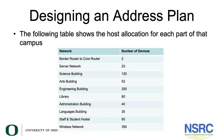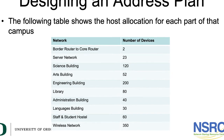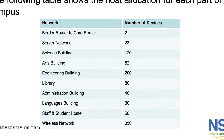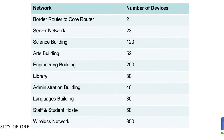The following table shows you the host allocation for each part of that campus. As you can see on the screen, the border router to core router contains two devices. The server network contains 23 devices. The science building contains 120 devices, and so on to the wireless network which contains 350 devices.